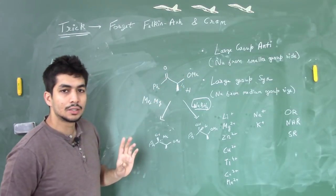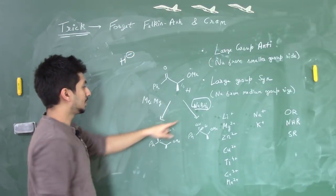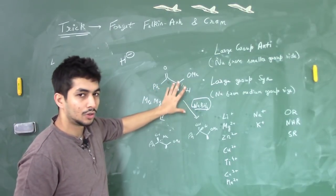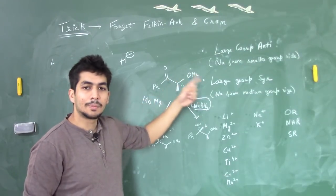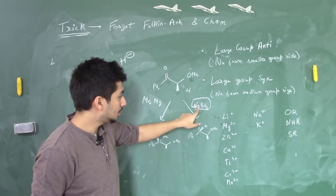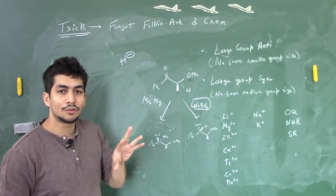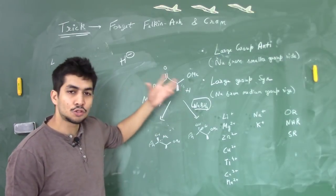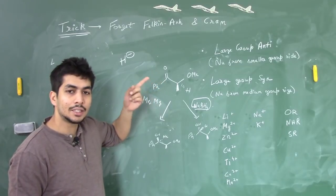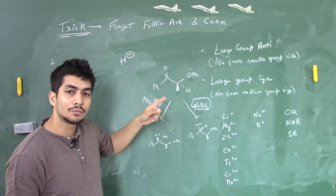With sodium borohydride, the nucleophile is H⁻. The OMe group is syn to the ketone. Even though OMe is capable of chelating, sodium does not form chelates. So we use the normal (non-chelation) analysis. Fortunately, OMe is also the large group here, so it's syn to the ketone. Since the large group is syn, the nucleophile attacks from the medium group side. The medium group is methyl, which is above the plane.